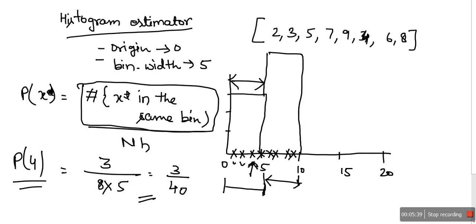First check in which bin this x is available, and then find out the number of data points in that bin. Divide it by the total number of points and bin width. In the next video I'm going to take k-NN estimator and kernel estimator. Thank you very much for watching.